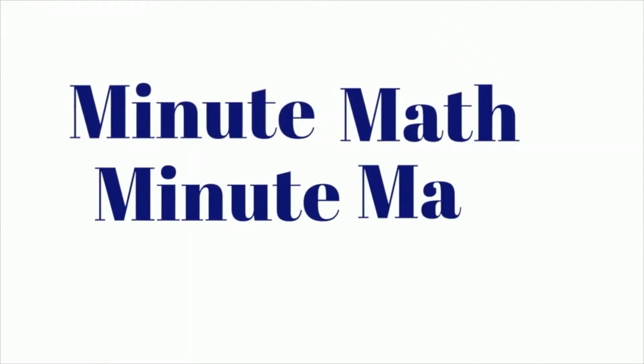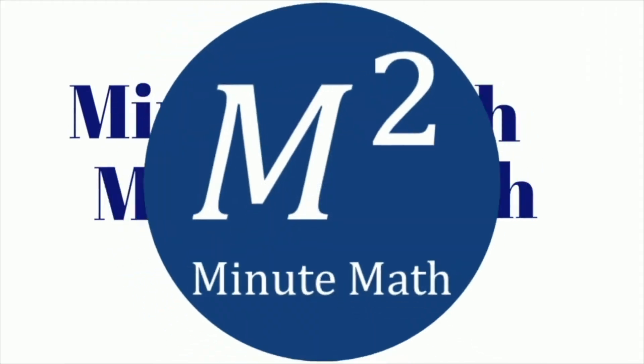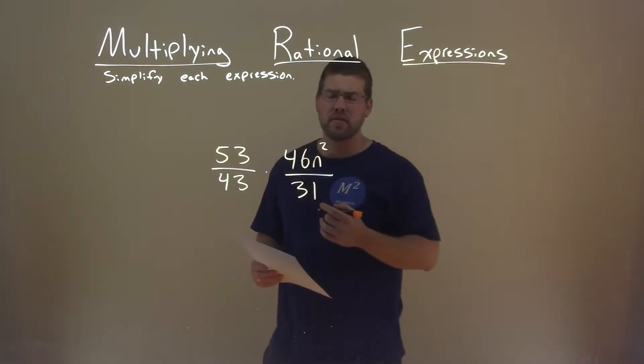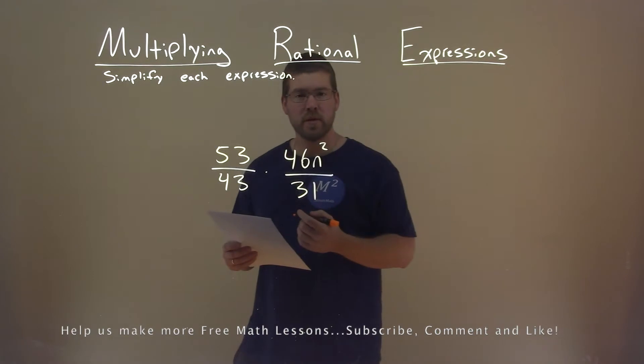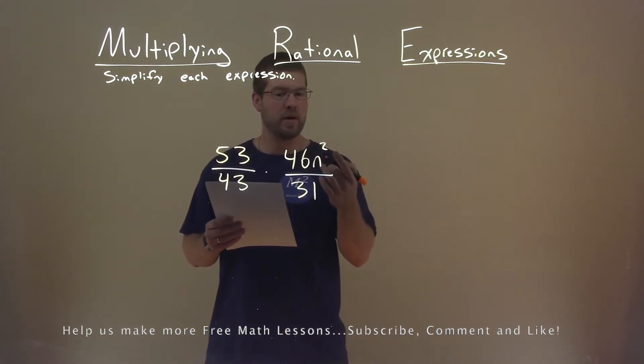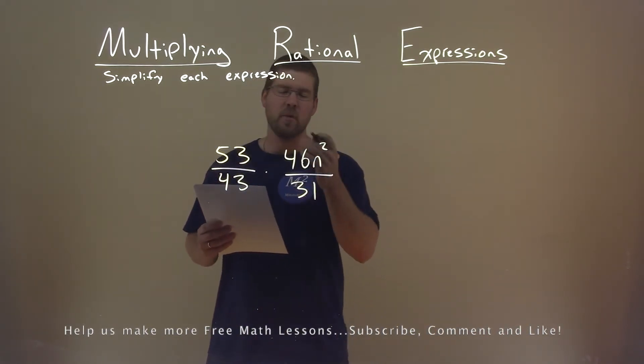MinuteMath, MinuteMath, when you need help you use MinuteMath. We're given this expression right here: 53 divided by 43 times 46n squared divided by 31, and we need to simplify this.